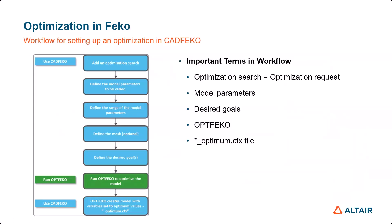To apply our software FICO for your optimization process, you need to understand the following workflow for setting up optimization, mostly in CAD FICO. The first step is to add an optimization search, define the model parameter, define the mask, and define the desired goal. In the workflow, you need to know some important terminology: optimization search and model parameters, design goal of FICO, and the underscore optimum CFX file.